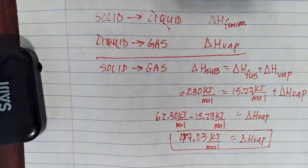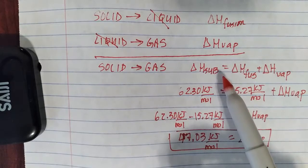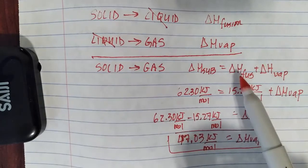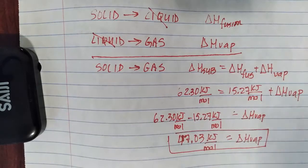The equation that you can use to help solve the problem, the delta H of sublimation, the heat required to sublime a substance is the heat required to fuse it, plus the heat required to vaporize it. We're talking about one mole of a substance.